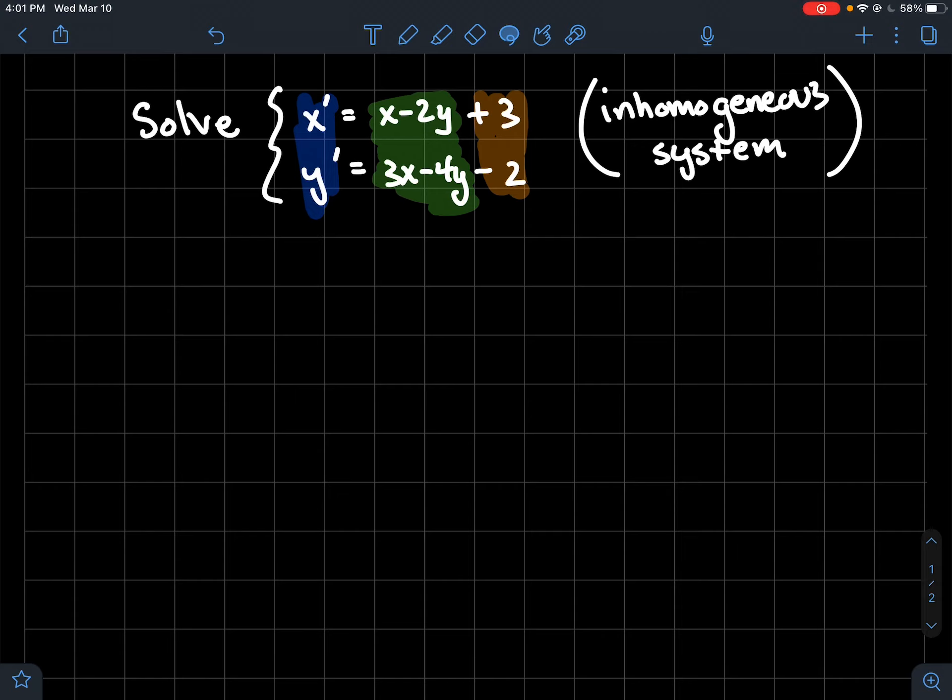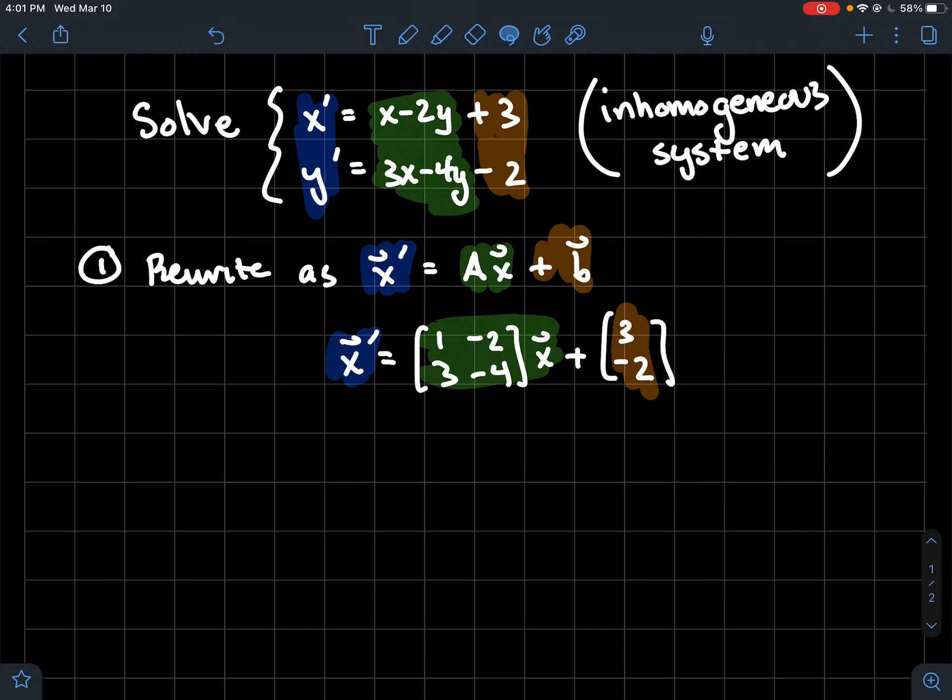Here's how we go about trying to solve this when I have those extra constants there on the end. First thing we're going to do is rewrite this in a vector equation, so like the vector x prime equals some matrix A times the vector x plus the vector b. I tried to color code it so you can see exactly how we're going to turn the system into this vector equation or this matrix equation.